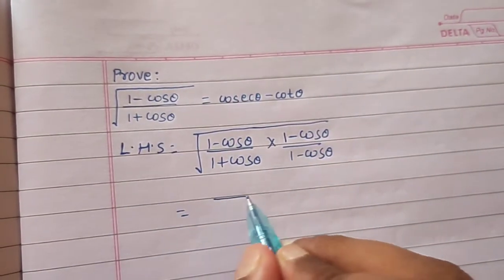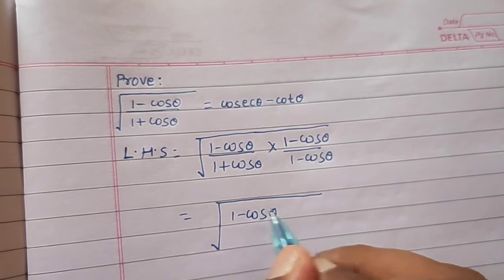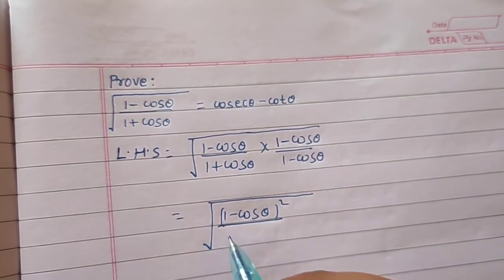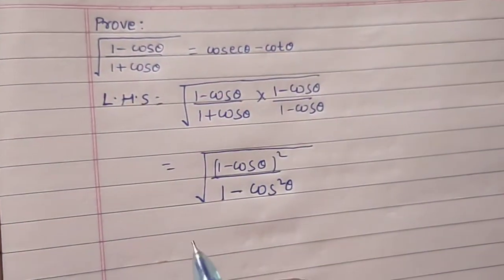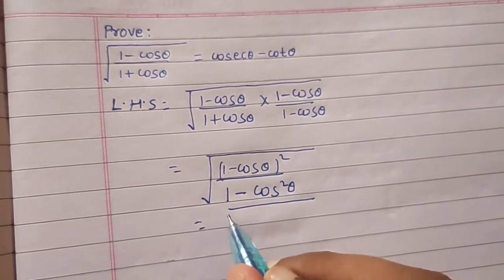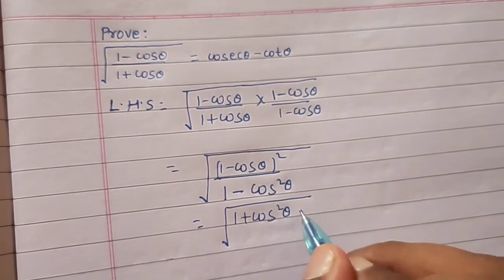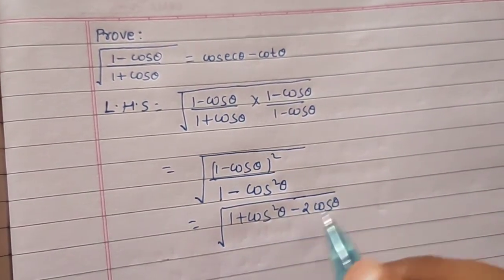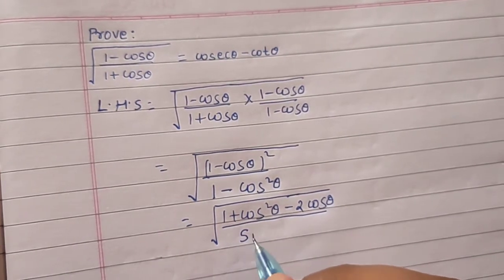In the numerator this becomes 1 minus cos theta the whole square, and in the denominator using a plus b times a minus b equals a square minus b square, we get the square root of 1 plus cos square theta minus 2 cos theta divided by sin square theta.